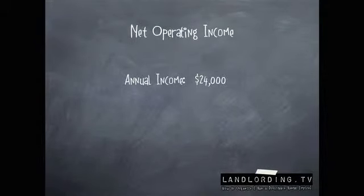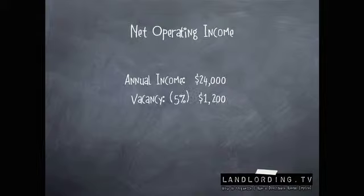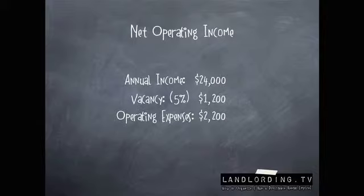Okay, so let's actually run this in an example. If your annual income is $24,000 a year — this is your annual gross planned or scheduled income, meaning say you've got four units and the total is $2,000 a month, that's $24,000 a year. So let's do a five percent vacancy on it; typically people use between three and six percent. At five percent we're going to get $1,200 for the year — that's like two apartments two months vacant for a $600 apartment. And let's say operating expenses of $2,200: that's your insurance, any maintenance fees, advertising, little things like that — again, not your mortgage payments.